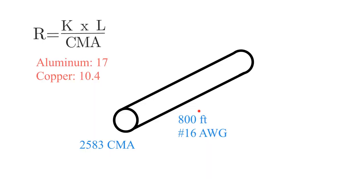So now we have everything we need. We know we have an 800 foot length. We have a number 16, which gives us a CMA of 2,583 CMA. And we know that our copper is 10.4 for resistivity.